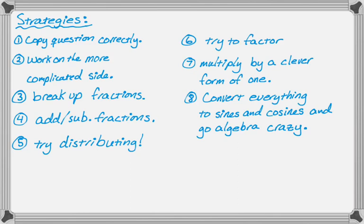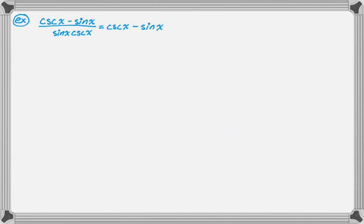In this video I'm going to talk primarily about breaking up fractions and adding and subtracting fractions, but of course you can't really just talk about those, the other ones are going to come up. So let's look at some examples. The first one: we have cosecant minus sine all over sine times cosecant is equal to cosecant minus sine.